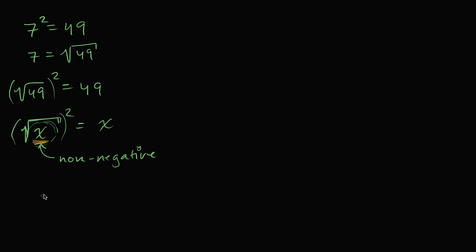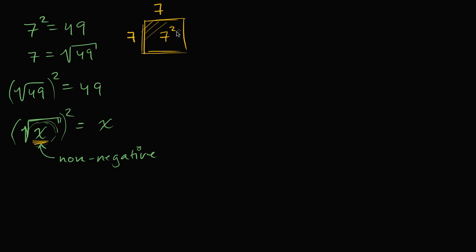The focus of this video is really just to review square roots so we can start thinking about the cube root. Where does the notion of squaring or taking a square root come from? It comes from finding the area of a square. If I have a square with side length seven, all the sides are seven, and the area would be seven times seven, or seven squared.